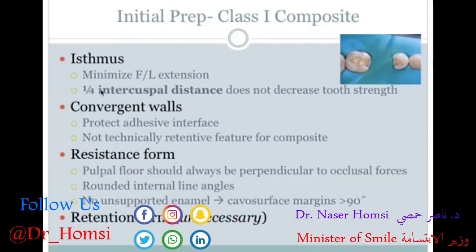The isthmus refers to the facial-lingual extension of the preparation design. Ideally it should be no more than one millimeter, which is about a quarter of the intercuspal distance — so you don't reduce the strength of the tooth. But as with everything here, you have to take it with a grain of salt because the preparation is ultimately determined by the bounds of the disease.